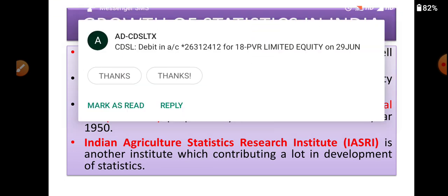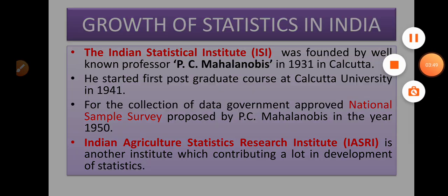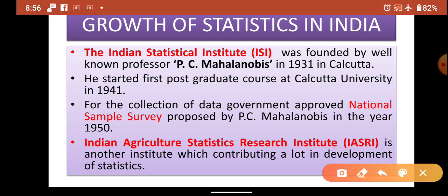Now let's look at the growth of statistics in India. In India, the biggest statistical body is the ISI — the Indian Statistical Institute. The Indian Statistical Institute was founded by the well-known professor P.C. Mahalanobis in 1931 in Calcutta, because at that time Calcutta was the capital city of India.